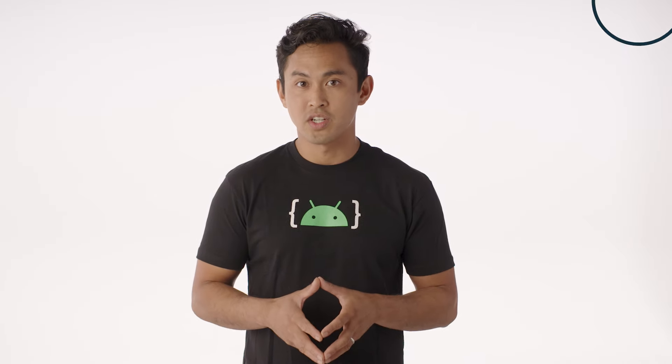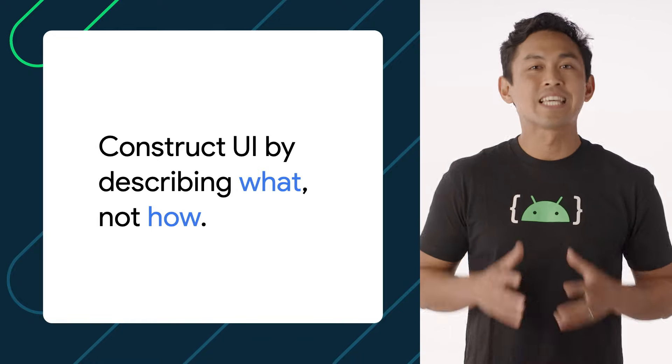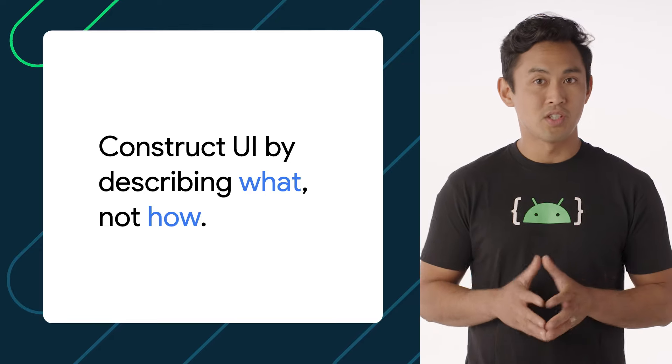With Views, you describe step by step how to get your UI to look a certain way. You do this by defining UI in XML, finding Views from XML in code, and then calling setter functions to get your UI to look the way you want. With Compose, you no longer have to write XML. UI can entirely be described in code, in Kotlin, taking full advantage of Kotlin constructs. Constructing UI by describing what, not how, is a key difference between Compose and Views — it's what makes Compose much more intuitive to work with.